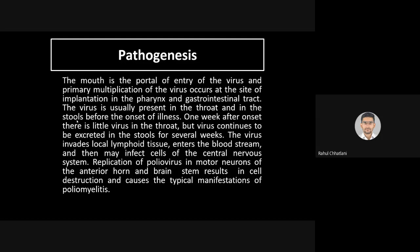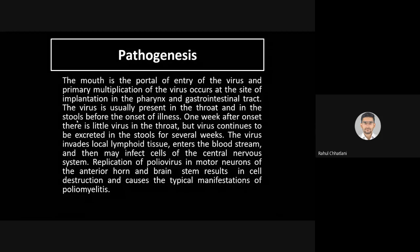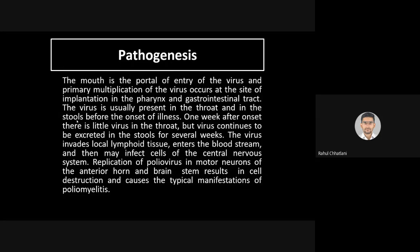One week after onset, there is little virus in the throat, but the virus continues to be excreted in the stools for several weeks, as it resides in the GI tract. The virus then invades local lymphoid tissue, enters the bloodstream, and may infect cells of the CNS — specifically the spinal cord. Replication of poliovirus in motor neurons of the anterior horn and brainstem causes cell destruction, producing the typical manifestations of poliomyelitis.